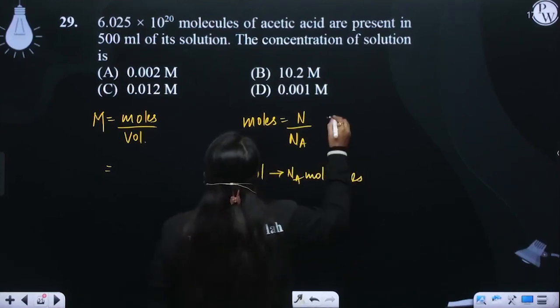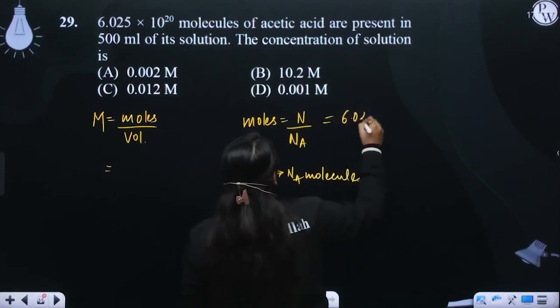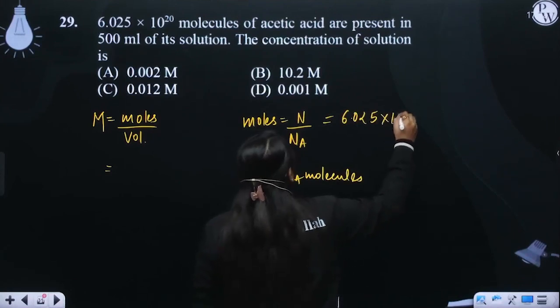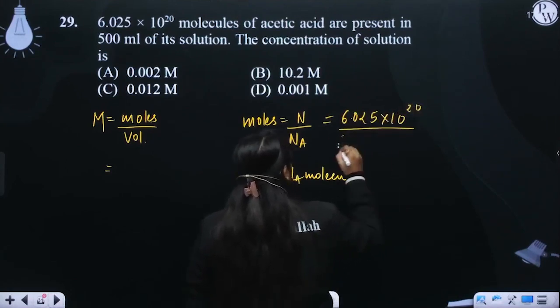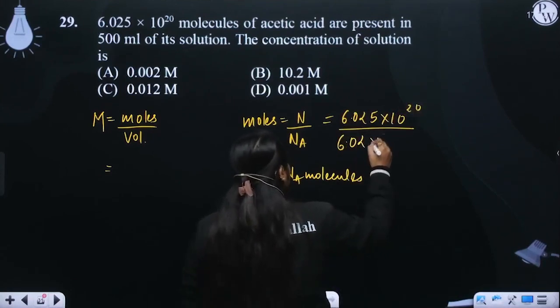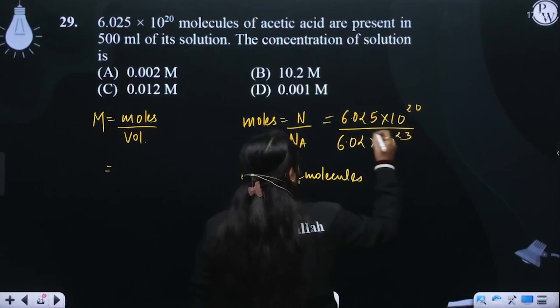Here comes the number of molecules, 6.025 × 10^20. Now we have to put Na in total value, 6.02 × 10^23. This is complete.